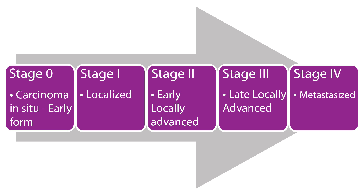For many cancers, the T and M combinations are grouped into five less detailed stages. Stage 0, also called carcinoma in situ, means abnormal cells are present but have not spread to nearby tissue. Stages 1, 2, and 3 indicate cancer is present — the higher the number, the larger the tumor and the more it has spread into nearby tissues. Stage 4 means the cancer has spread to distant parts of the body.